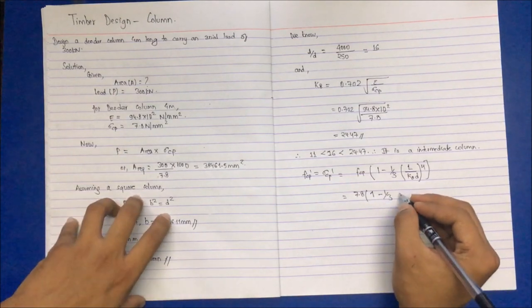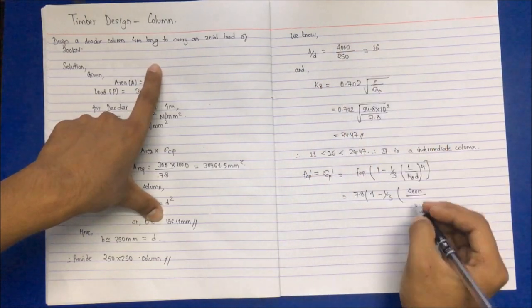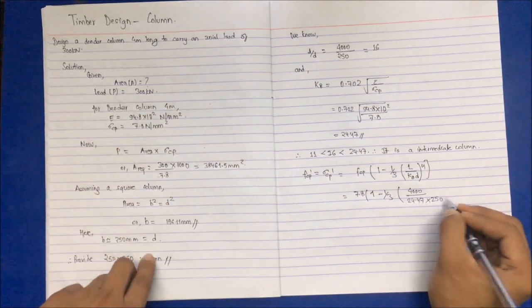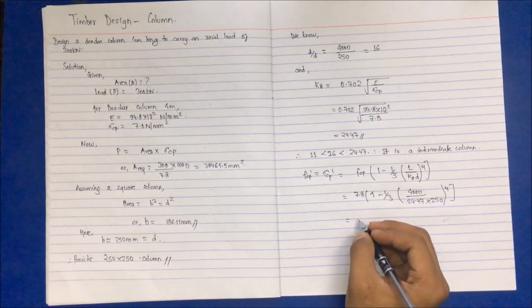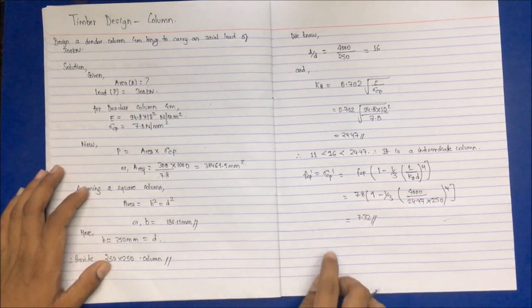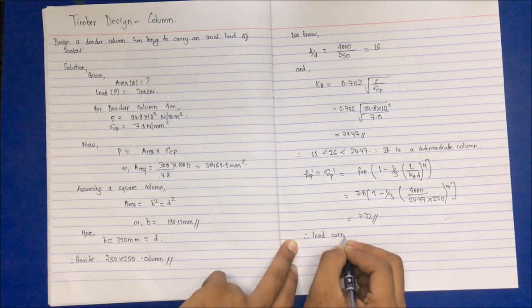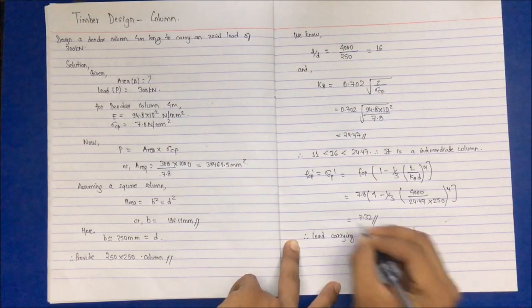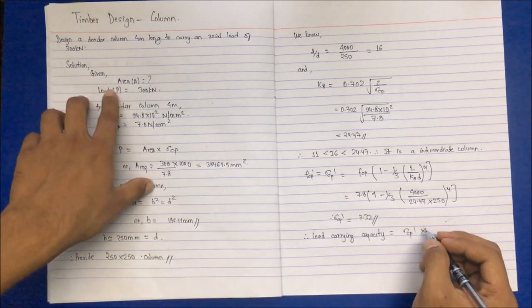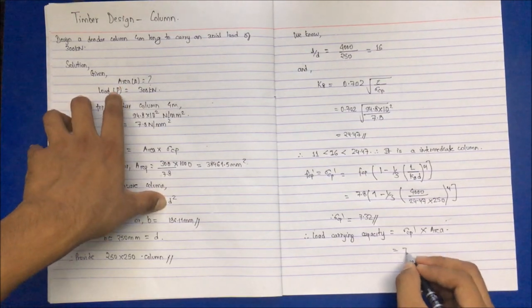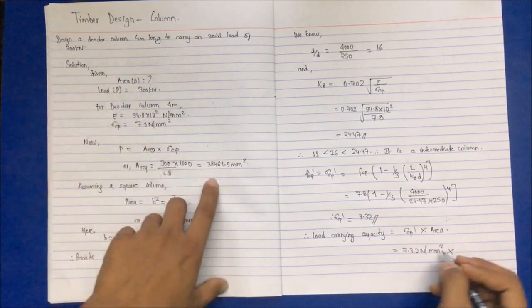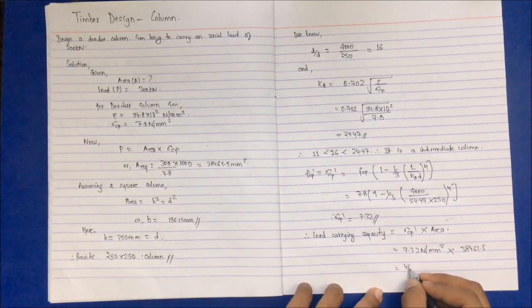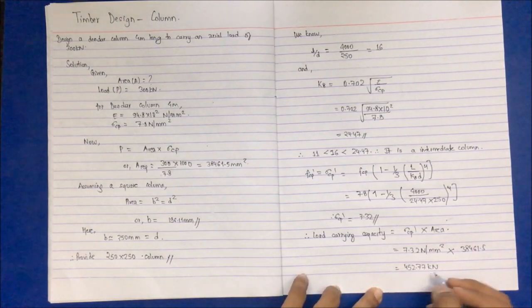We get this value as 7.32. Then we can calculate load carrying capacity - the design strength of the timber. Load carrying capacity equals sigma cp dash multiplied by area. That is 7.32 newton per mm square multiplied by 38461.5 mm square, which gives 452.77 kilonewton.